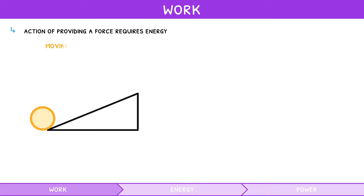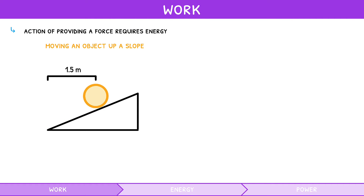Work done moving an object up a slope: a ball is rolled 1.5 meters up a 30-degree slope by a resultant 100 Newton force. Thus, the work done is force times distance times cosine of theta, which is 75 joules.